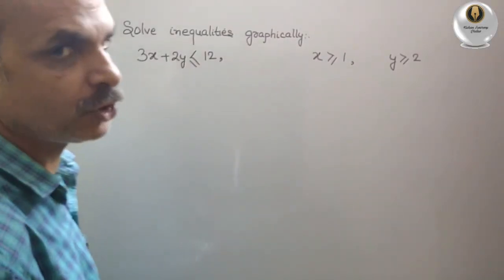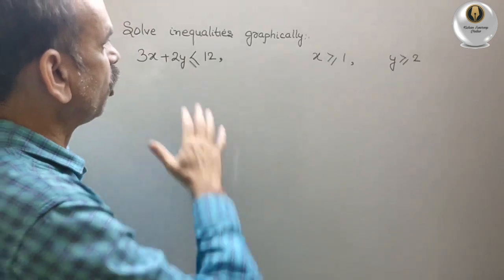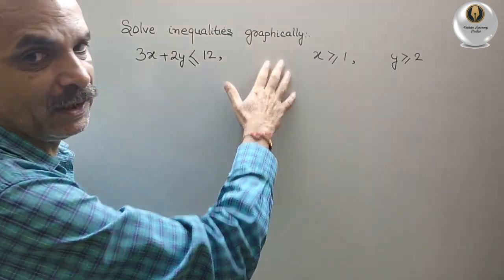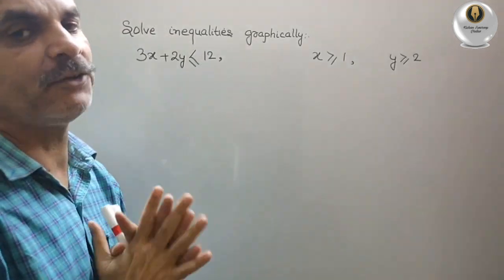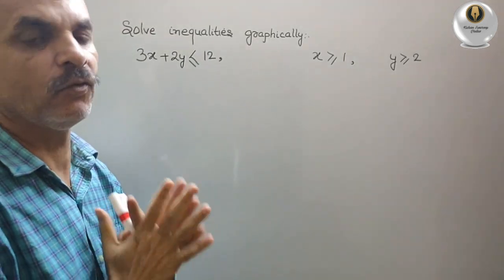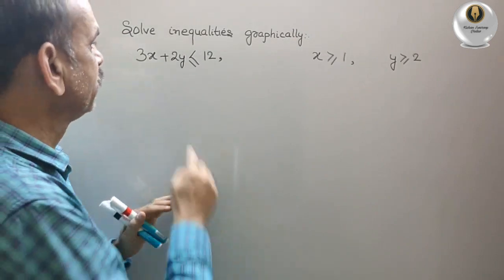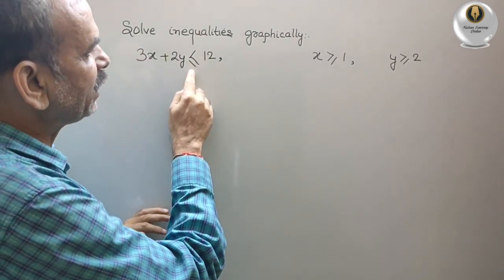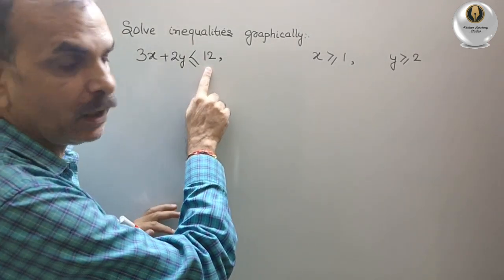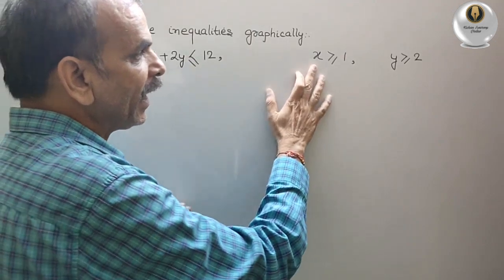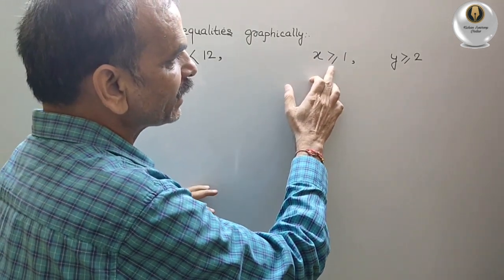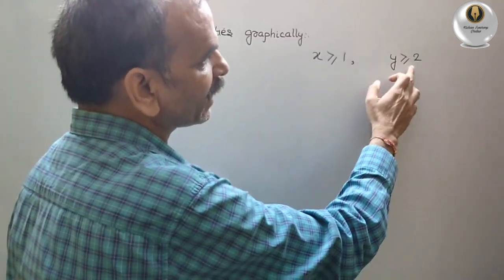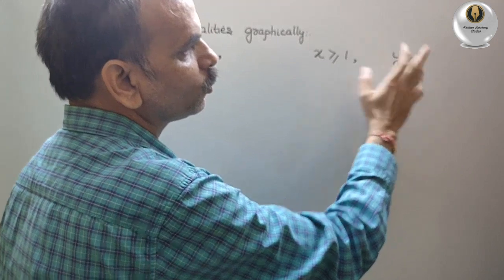Your question is to solve inequalities graphically. They are given three equations: 3x plus 2y is less than or equal to 12, x is greater than or equal to 1, and y is greater than or equal to 2.